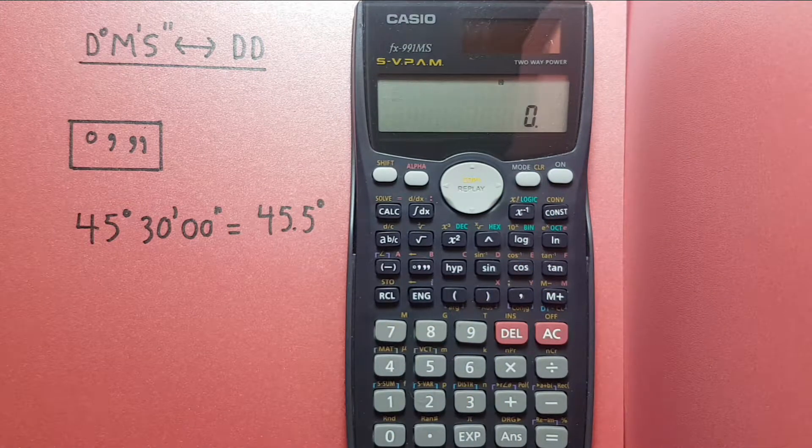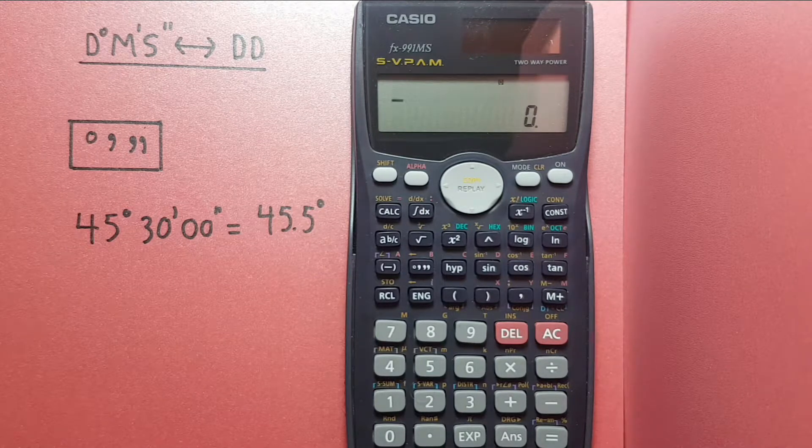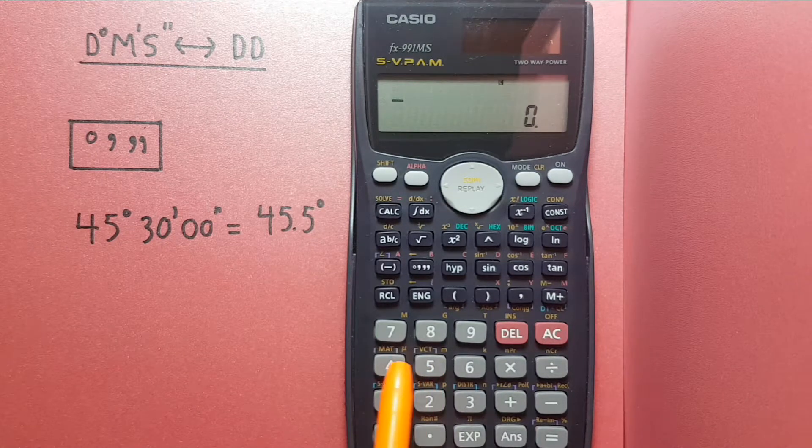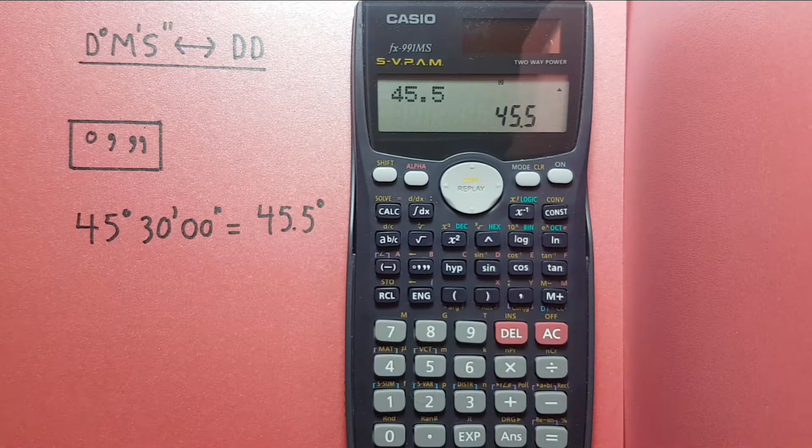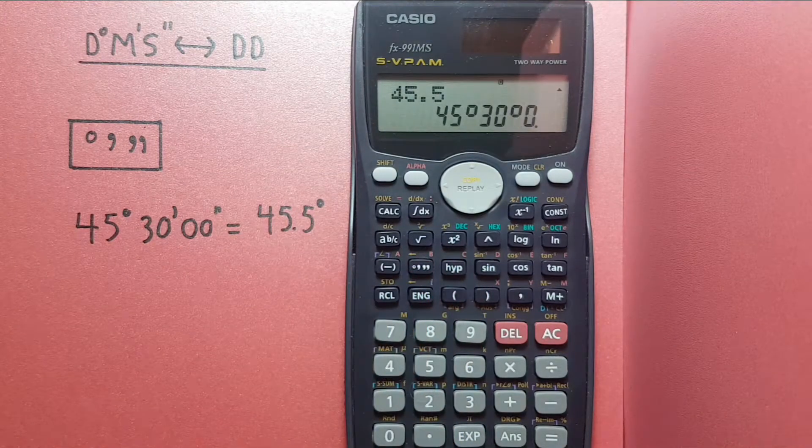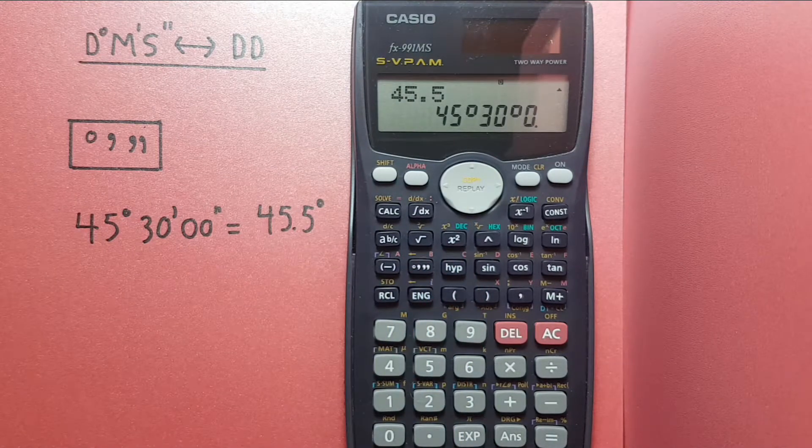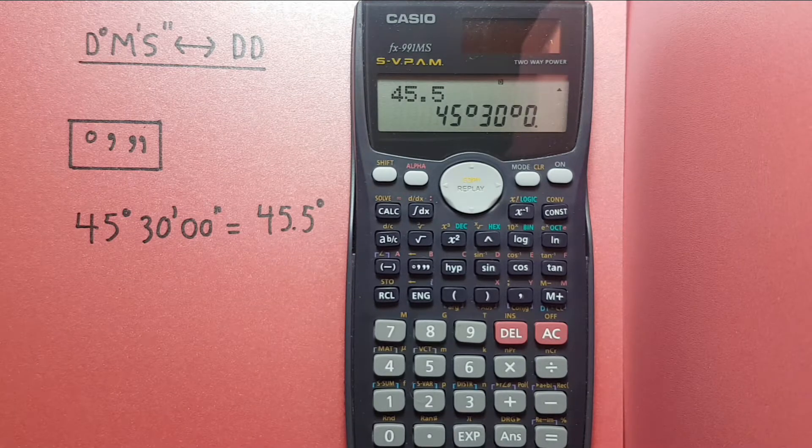And what if we had the decimal degrees and wanted to convert to DMS? Well, if we put 45.5 degrees on the screen and then press the degree key, we can see we now have 45 degrees 30 minutes 0 seconds, or the correct answer.